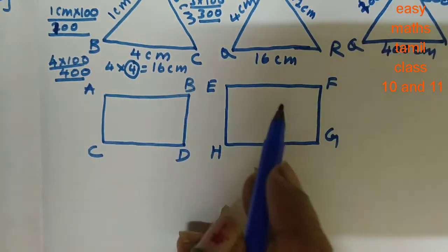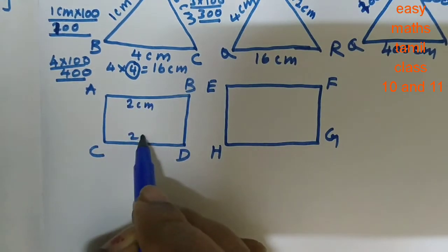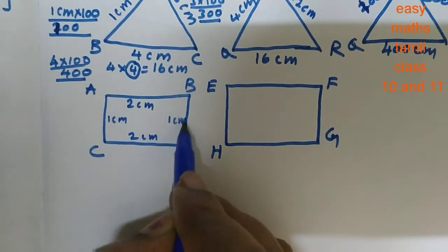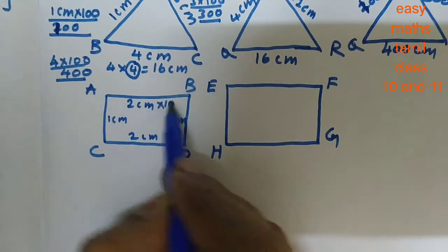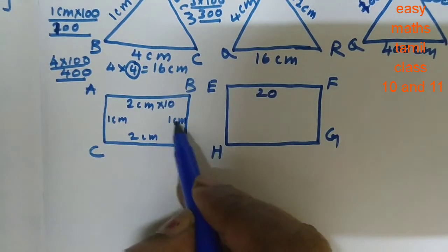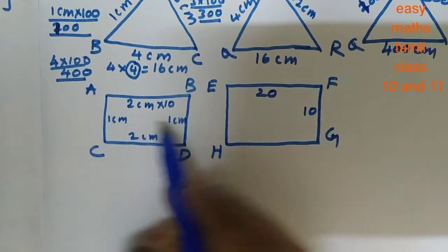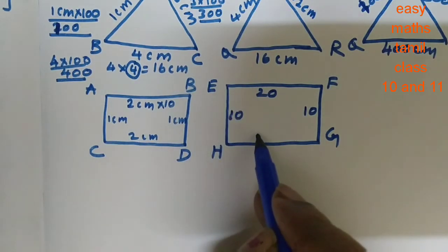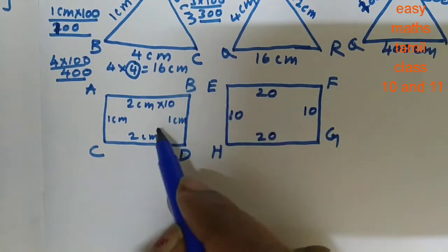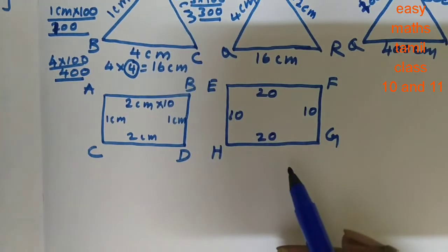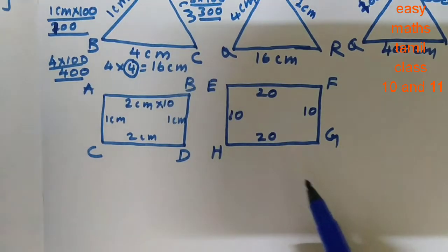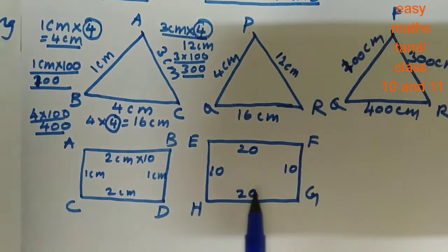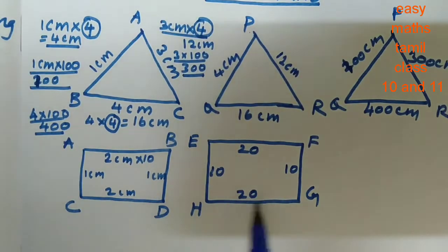Consider a rectangle with dimensions 2 cm and 1 cm. If we multiply by 10, we get 20 cm and 10 cm. Then the two rectangles are in the same proportion or in the same ratio, and the two geometrical figures are similar polygons.